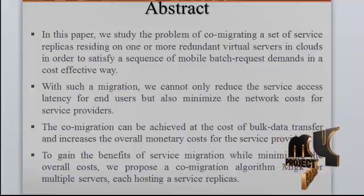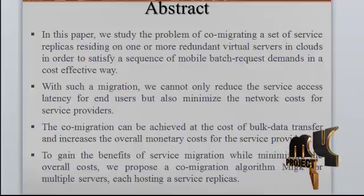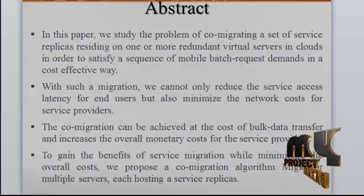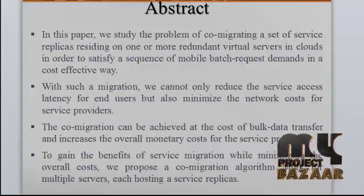The co-migration can be achieved at the cost of bulk data transfer and increases the overall monetary cost for the service providers. To gain the benefits of service migration while minimizing the overall cost, we propose a co-migration algorithm for multiple servers each hosting service replicates. We also study this problem in its static offline form by proposing a parallel dynamic programming based algorithm that integrates the branch and bound strategy with sampling techniques in order to approximate the optimal DP results.